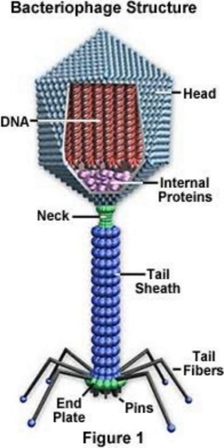The core tube is covered by a sheath or tube made up of about 144 contractile subunits. The free end of the core tube has a hexagonal end plate. The end plate has six spikes and six fibers. The spikes are used for penetration and the fibers are used for attachment on the host.